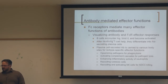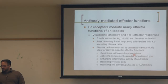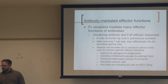B cells encounter antigen, become activated after receiving T cell help, and differentiate into antibody-secreting plasma cells. These antibodies induce opsonization, activate the complement cascade, enhance inflammation and neutrophil activation, recruit cytotoxic T cells, and activate NK cells for ADCC killing.